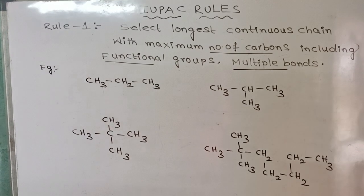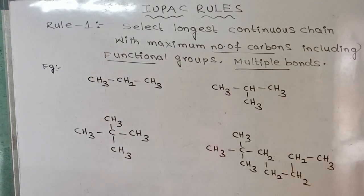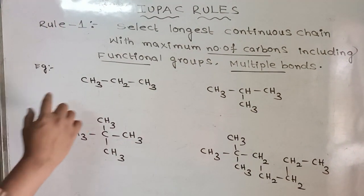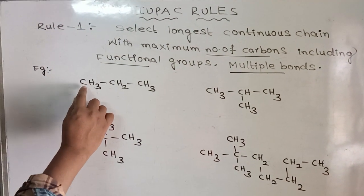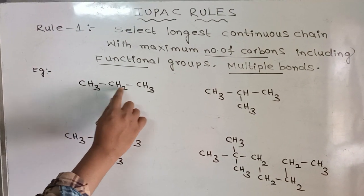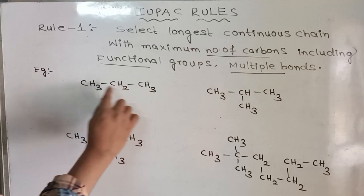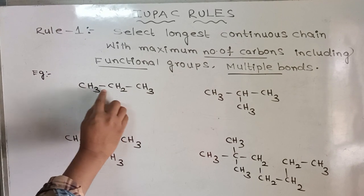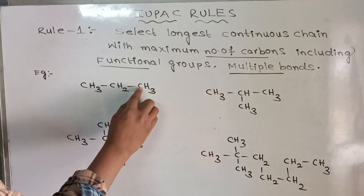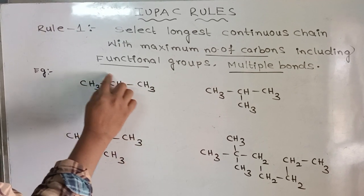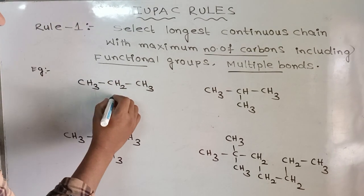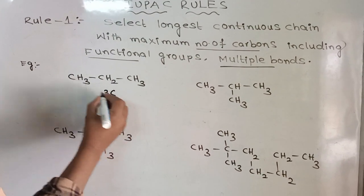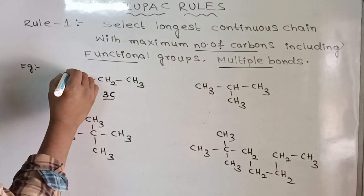Let me discuss the first example. I am moving in this direction: 1, 2, 3. I am not giving any gap. The maximum number of carbons here is 3 carbons, so it is the parent chain.